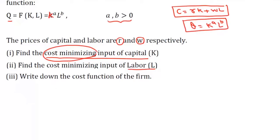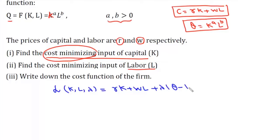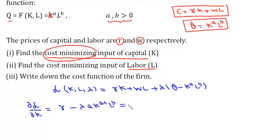We define the Lagrangian function L(K, L, lambda) = rK + wL + lambda * (q - K^a * L^b). Finding del L/del K gives r - lambda * a * K^(a-1) * L^b = 0, so our first equation is r = lambda * a * K^(a-1) * L^b.